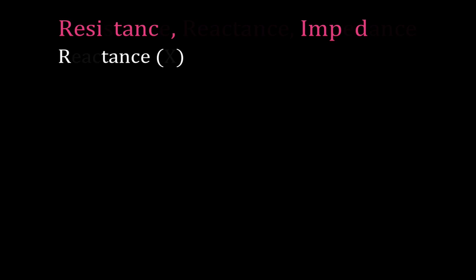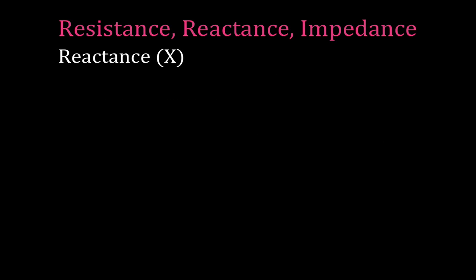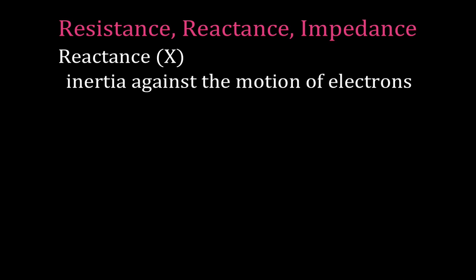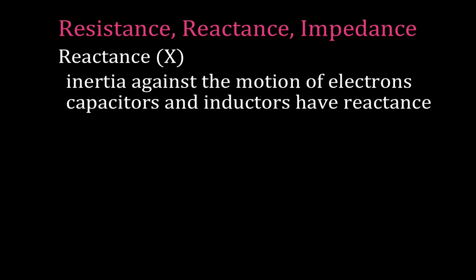Reactance. We're going to have two kinds of reactance — capacitive and inductive — but reactance is the inertia against the motion of electrons. Reactance occurs as a reaction to changes in current and voltage, so we say it's the inertia against the motion of electrons. Capacitors and inductors both have reactance.